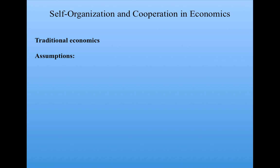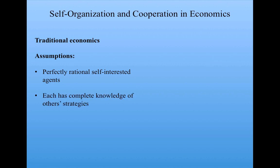This model was constructed to display some of the flaws in assumptions made by traditional economics research — namely that economic agents are perfectly rational, self-interested individuals who have complete knowledge of one another's strategies and can do perfect deductive reasoning. Of course, economists don't believe this is true of agents, but these assumptions make mathematics possible to do on economic problems.